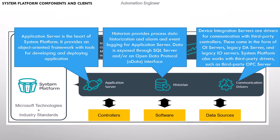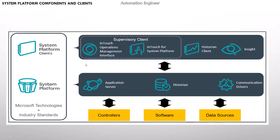That covers the components of the system platform. Next, about the system platform client — we come to the top layer. The system platform client includes the first pack: the Supervisory Client. The Supervisory Client runs the operator interface and provides real-time access to the Application Server data, alarm, and events. There are two Supervisory Client products based on different technologies, but both can coexist in the same system platform solution.